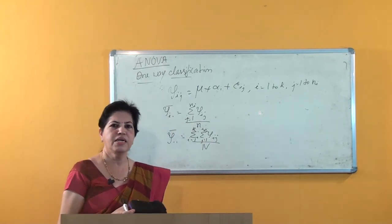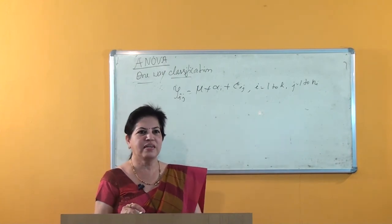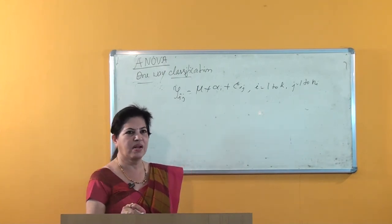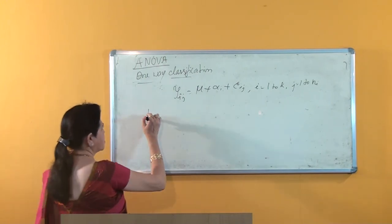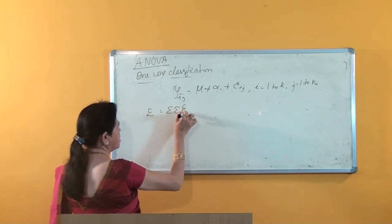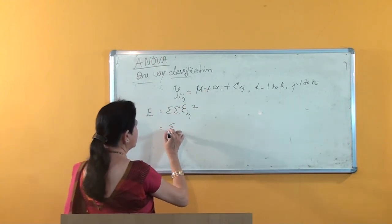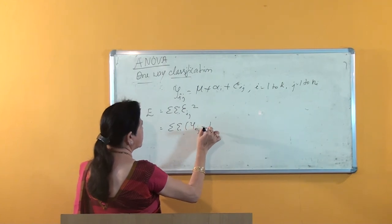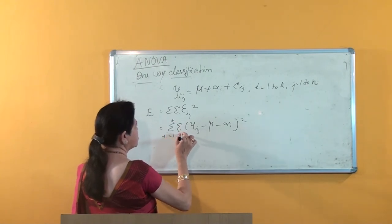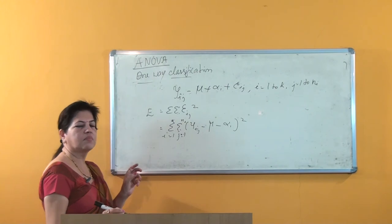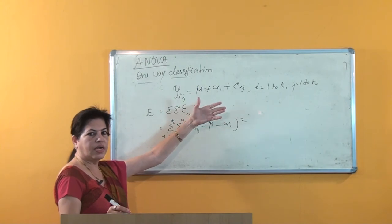Now let us find the least squares estimates of the parameters mu and alpha_i. These parameters are estimated by minimizing the error sum of squares: E = double summation of epsilon_ij squared = double summation of (y_ij - mu - alpha_i) squared, for i = 1 to k and j = 1 to n_i. This is done by partially differentiating E with respect to mu and equating to 0, giving us a normal equation.